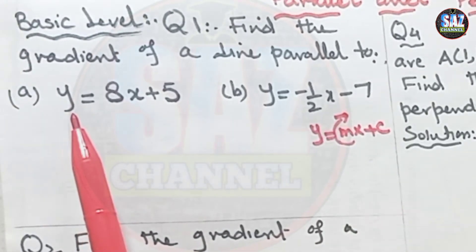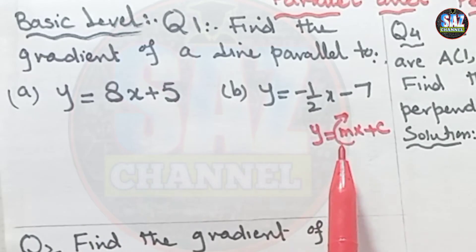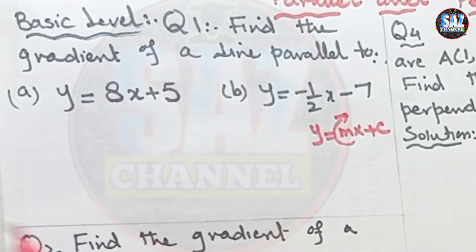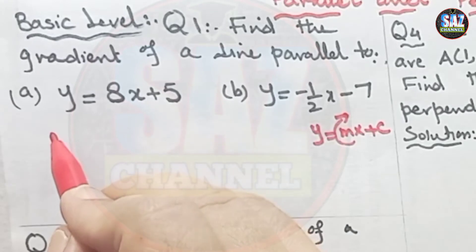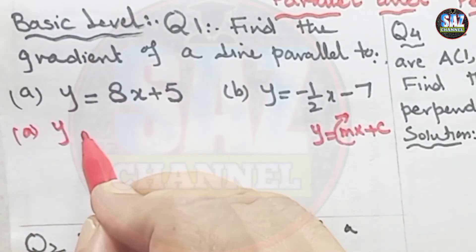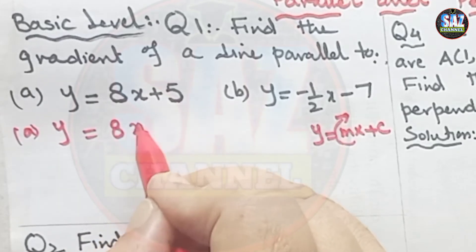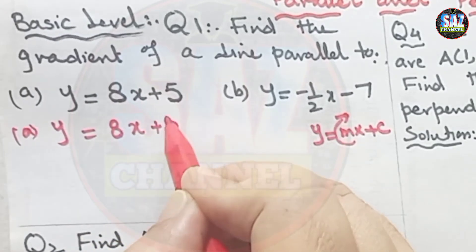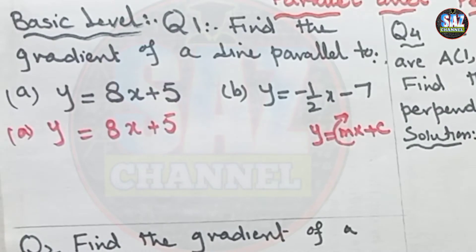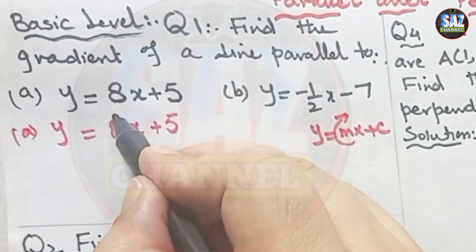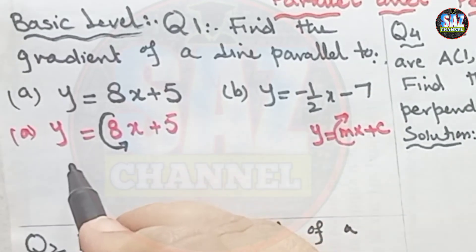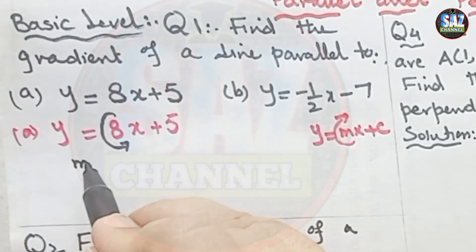We can express it in standard form. By comparison, we can see the coefficient of x is 8. For the first line, y equals 8x plus 5 — the coefficient of x here is 8. So the gradient of this line is 8. Very easy question.